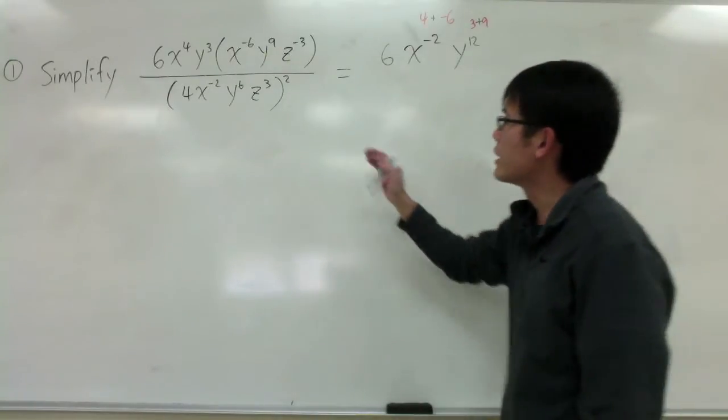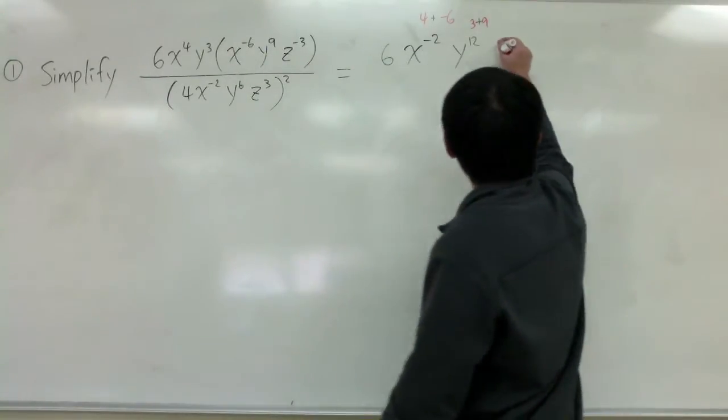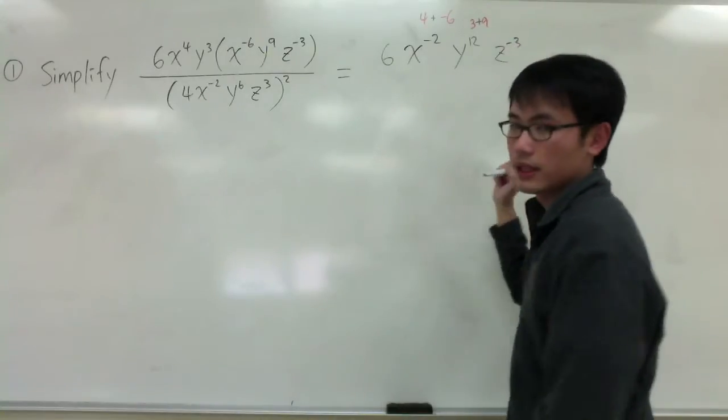And then, let's look at the z by itself. So, we just have a z to the negative 3, like that, over the denominator.